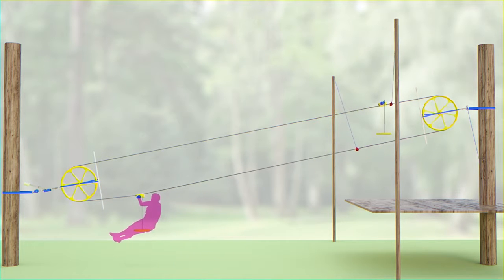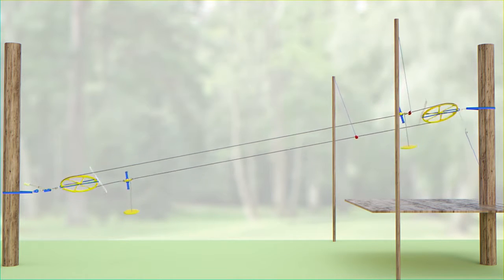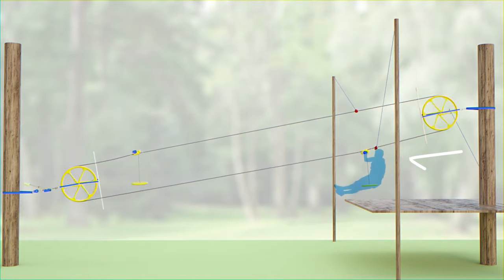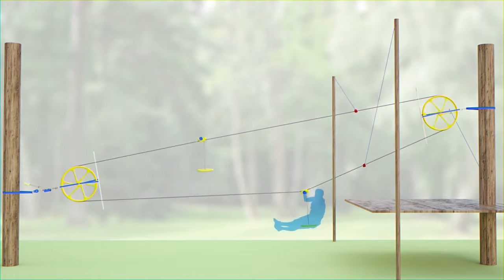As a rider approaches the lower station, they will see a large pulley spinning at the end of the ride. Before they get to it, they will slow to a stop at the lower platform, which marks the end of their ride.